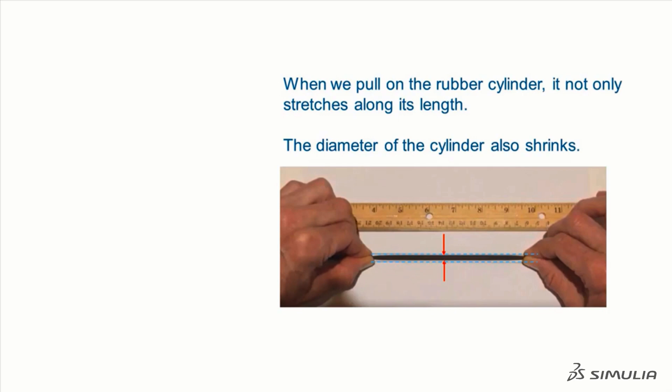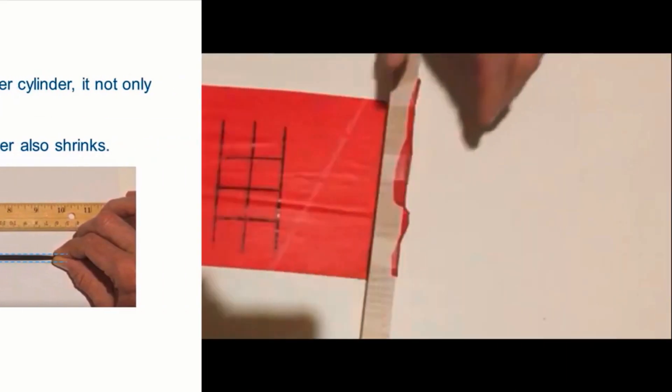When we pull on the rubber cylinder, it not only stretches along its length, the diameter of the cylinder also decreases. We can better observe this effect by pulling on a thin rubber sheet.